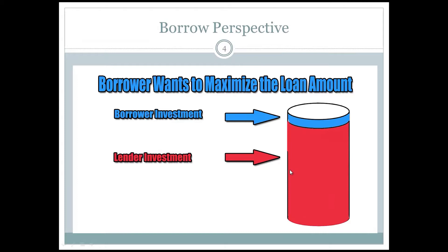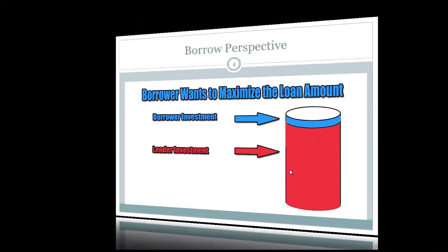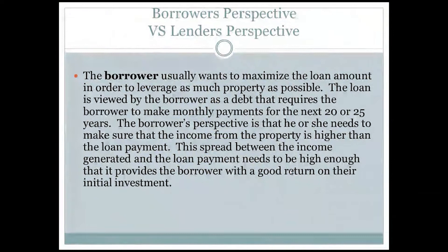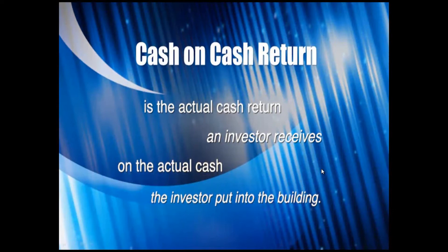I also want to mention the borrower's perspective versus the lender's perspective. The borrower usually wants to maximize the loan amount in order to leverage as much property as humanly possible, because he or she wants to buy those four properties rather than just one that we talked about in part three. The loan is viewed by the borrower as a debt that requires monthly payments for the next 15, 20, or 25 years. The borrower's perspective is that the income from the property must be higher than the loan payment, and that spread needs to provide a great cash-on-cash return on their initial investment.